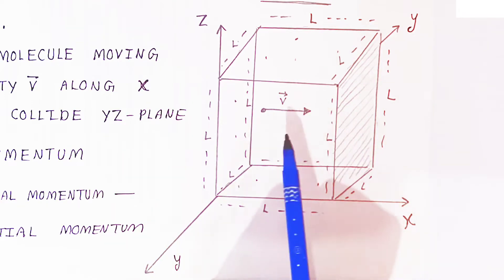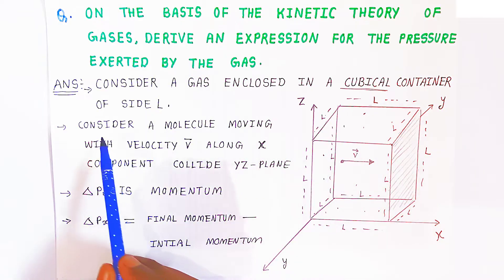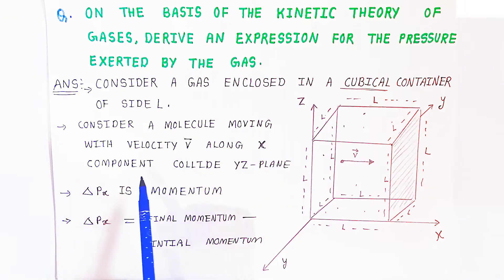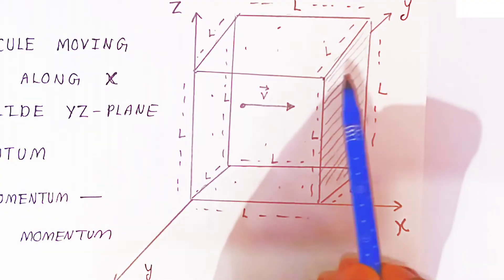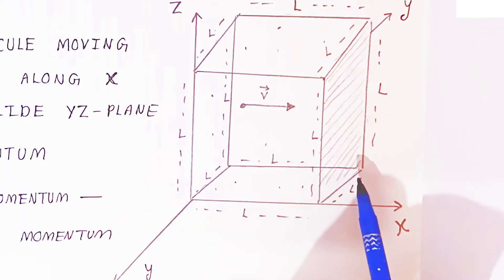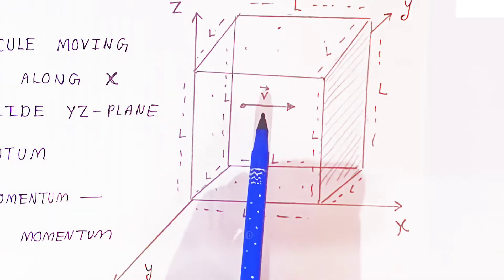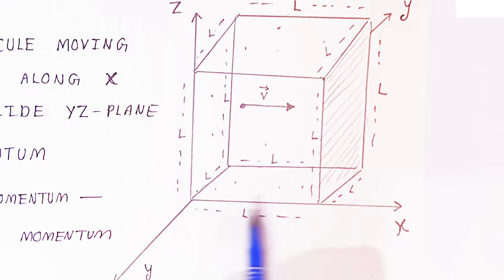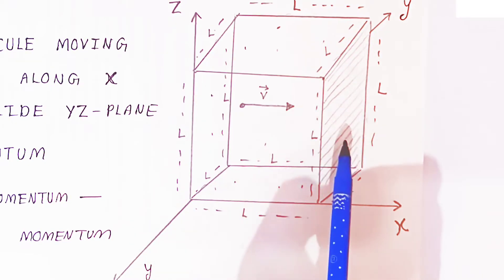Now we are taking only the pressure exerted along the x-axis. Consider a molecule moving with velocity v-bar along the x-component, and it is colliding with the y-z plane. This shaded part is called the y-z plane. The molecule is moving with velocity v-bar along the x-axis and colliding with this wall — that is, the y-z plane.